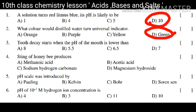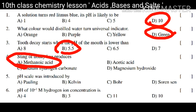It's green. Tooth decay starts when the pH of the mouth is lower than 5.5. The sting of a honeybee produces what? Methanoic acid. pH was introduced by whom?